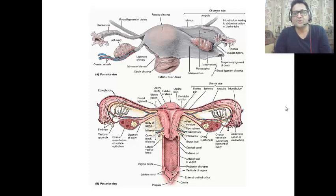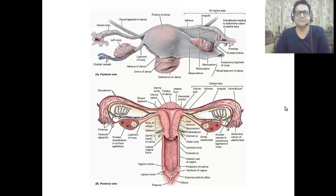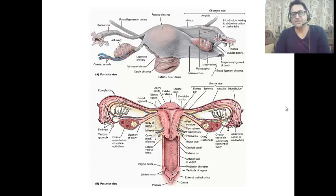This is an important diagram describing the various parts of the uterus and its ligaments. The broad ligament of the uterus is attached to the sides of the uterus and extends to the pelvic wall.